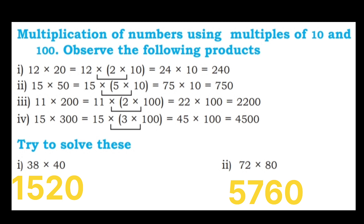Try to solve these. 38 into 40: multiply 38 by 4 first. 4 eights are 32, carry 3. 4 threes are 12, plus 3 is 15. So 38 into 40 is 1520. Next, 72 into 80: the answer is 5760.